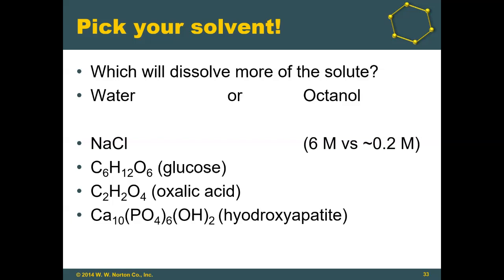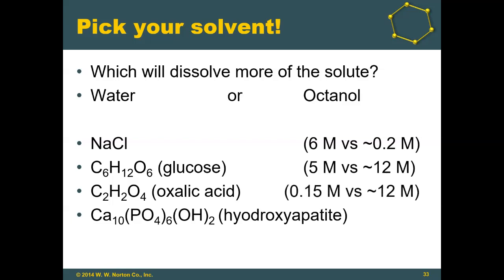Glucose is a larger molecule, so it is predicted that more glucose would dissolve in octanol than in water. Similarly, more oxalic acid is predicted to dissolve in octanol than in water. One reason is that oxalic acid is molecular and covalent — even though it is an acid, it does not react completely with water to generate protons and oxalate ions, so it stays neutral and is less hydrophilic. Octanol, which can both accept and form hydrogen bonds while also having dispersion forces, is well-suited for dissolving oxalic acid.